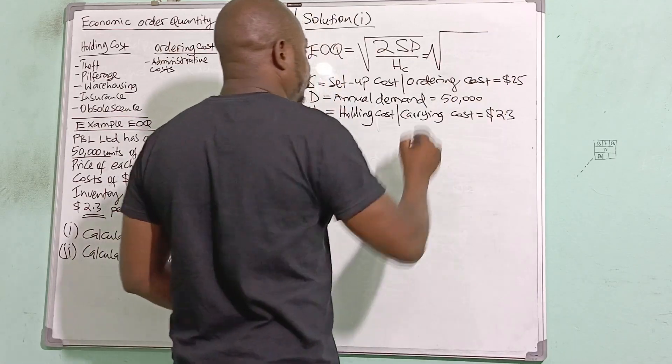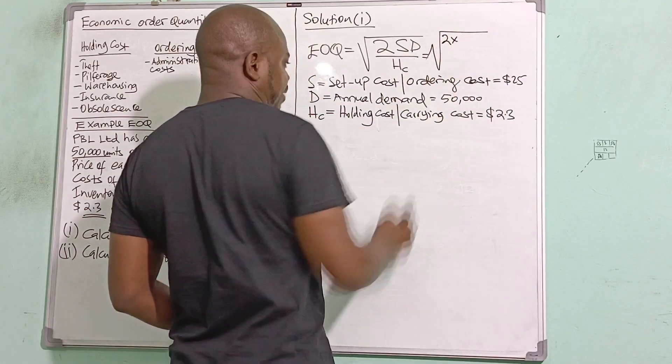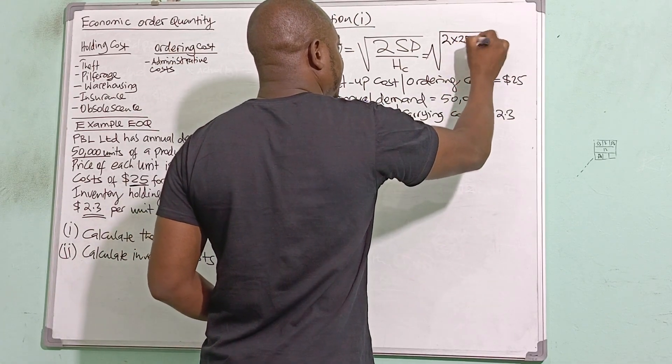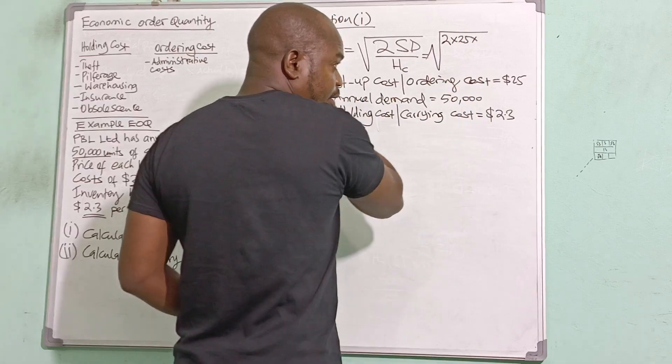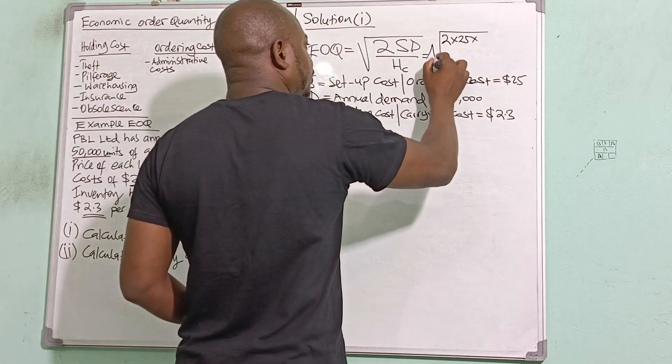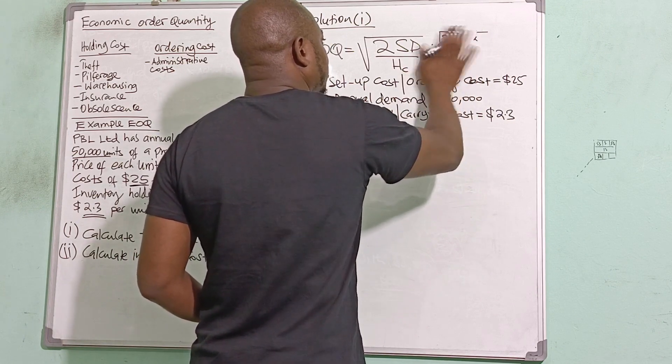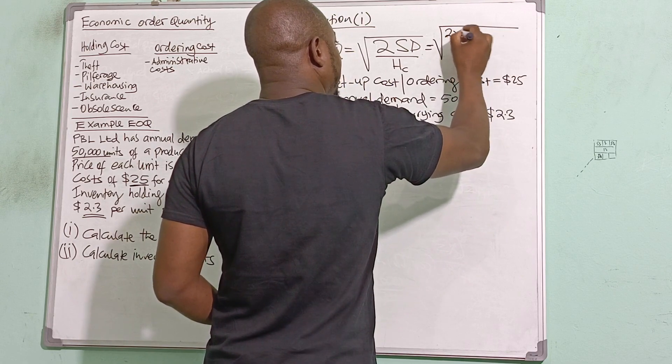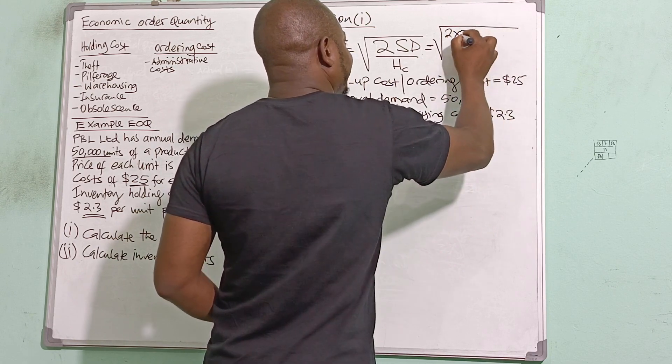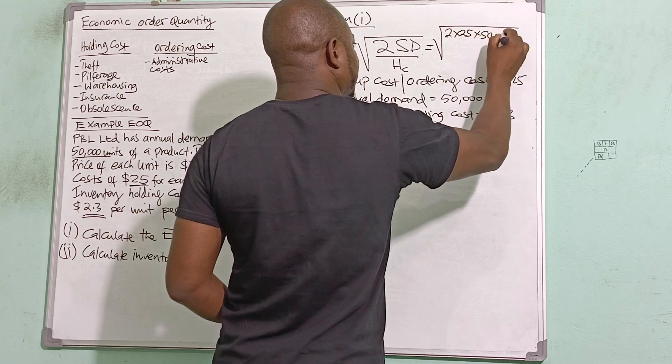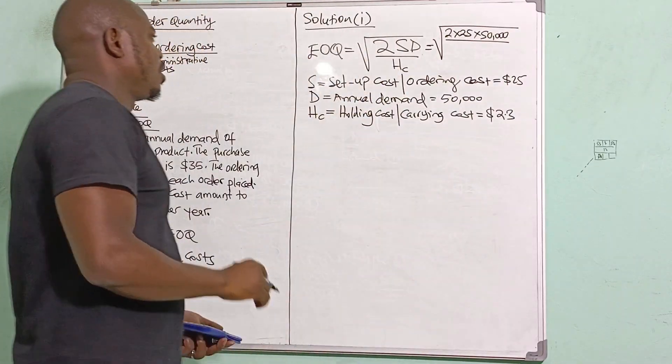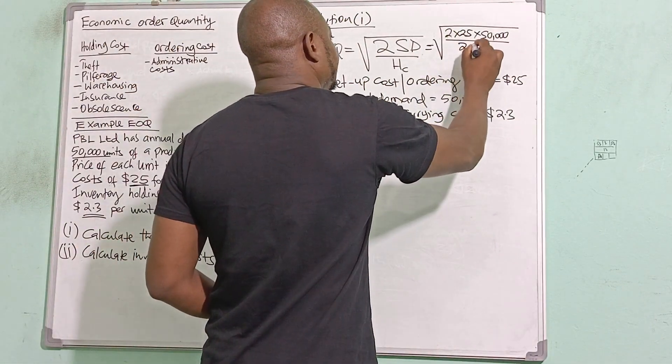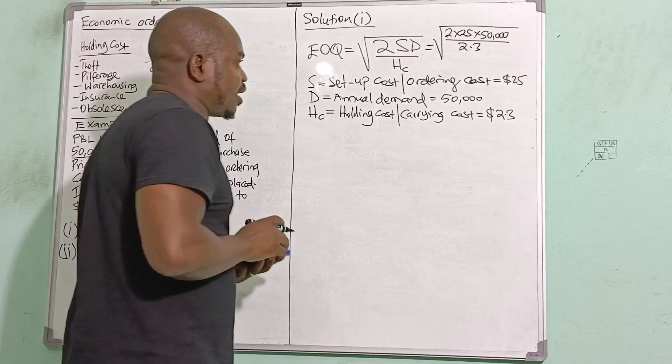I can now calculate my EOQ by simply saying 2 multiplied by setup cost, which is $25, multiplied by annual demand, which is 50,000 units, divided by 2.3. Let's see what my EOQ is.